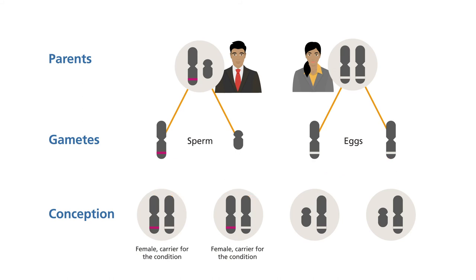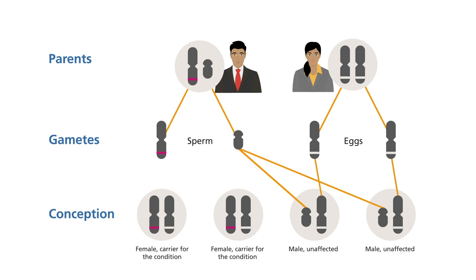If the father passes on his Y chromosome, the child will be a boy. As a boy inherits the Y and not the X chromosome from his father, he will not inherit his father's X-linked condition, nor pass it on to his children.